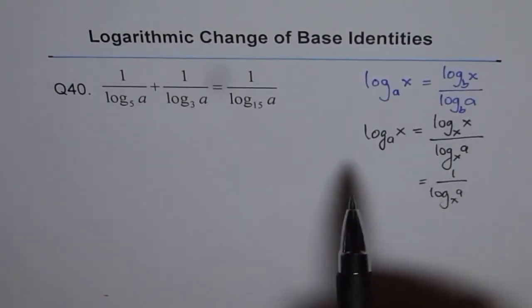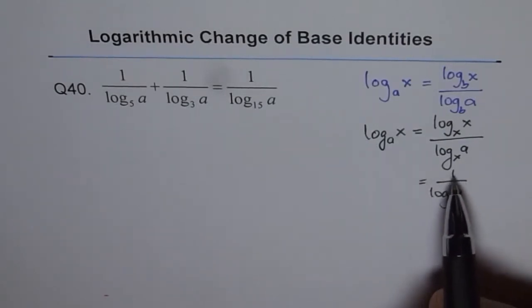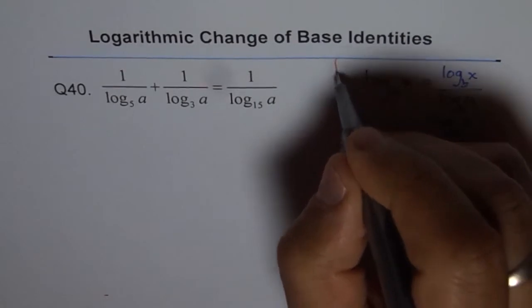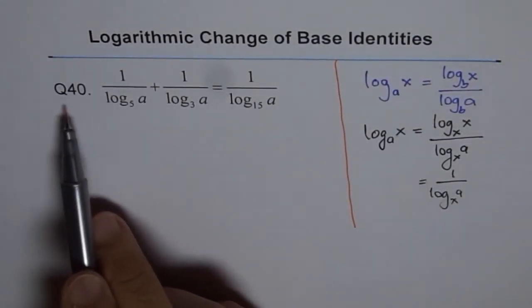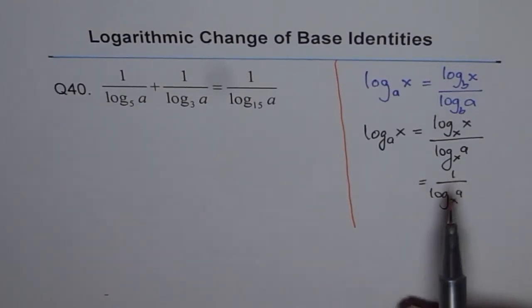It's a reciprocal relationship: if it's log_a(x), it becomes 1 over log_x(a). Do you see that part? This interesting proof will be used for most identities in this series of questions from 40 onwards.